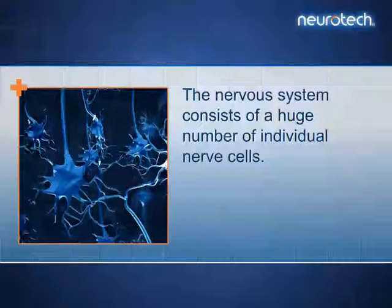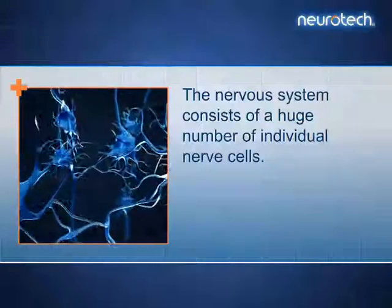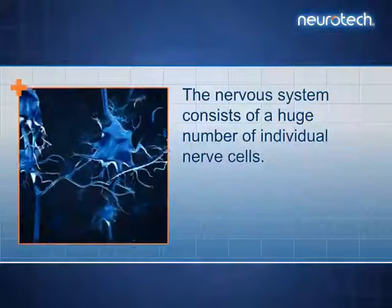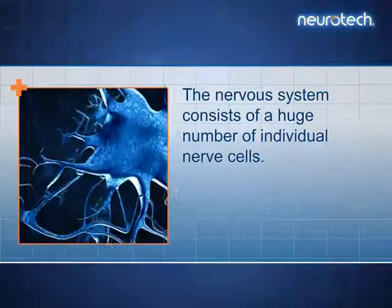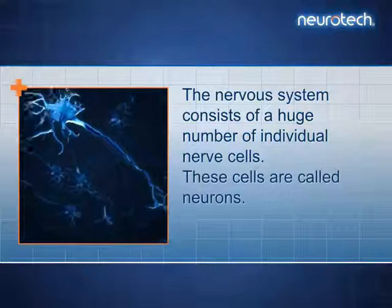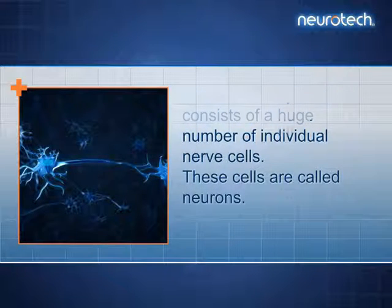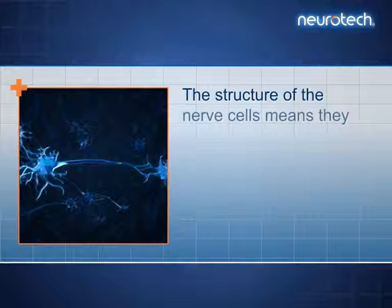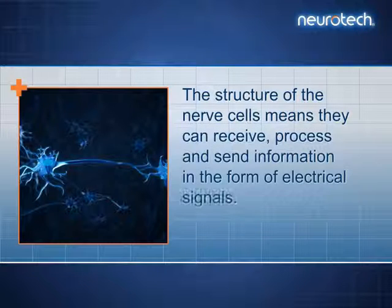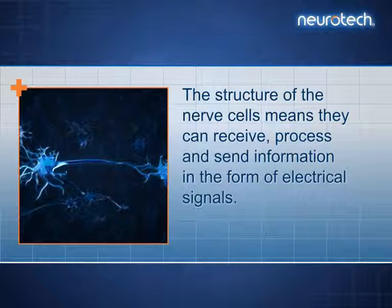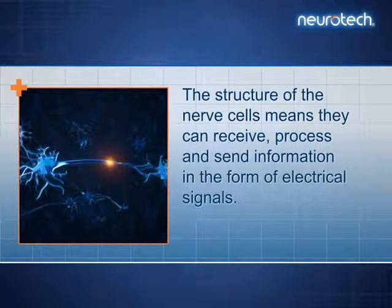The nervous system consists of a huge number of individual nerve cells. These cells are called neurons. The structure of the nerve cells means they can receive, process and send information in the form of electrical signals.